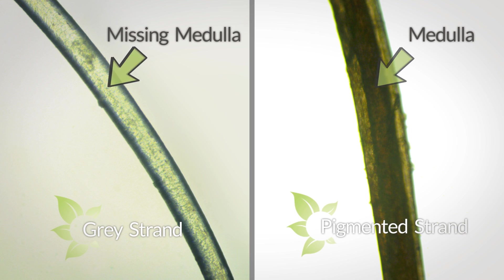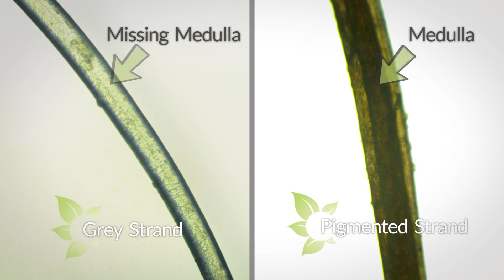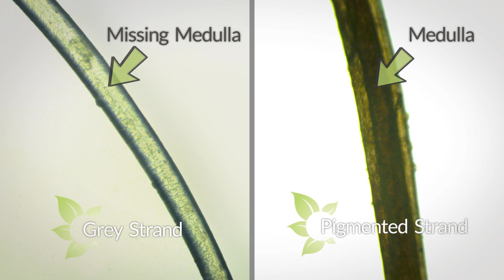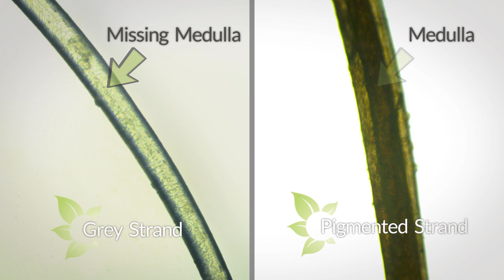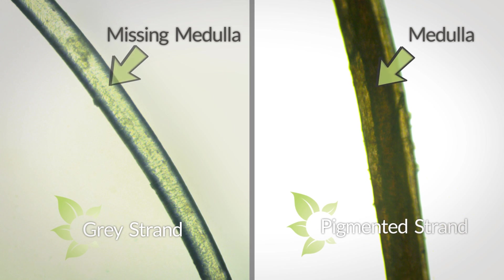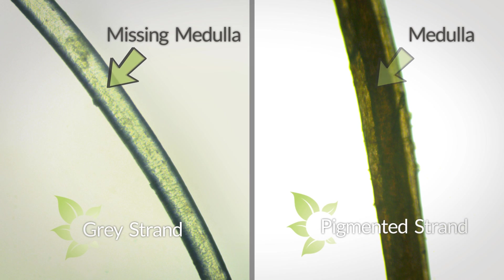Here are real magnified images of hair strands — one gray and one brown. With gray hair, the innermost layer of the hair strand called the medulla is missing or replaced by an air bubble, so it's thinner and more fragile. You may also notice that gray hair strands have a looser curl pattern than pigmented strands as well.